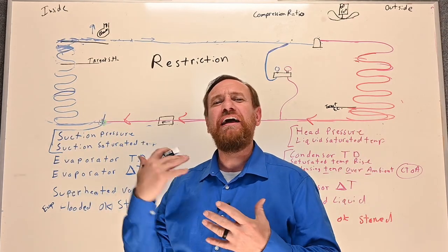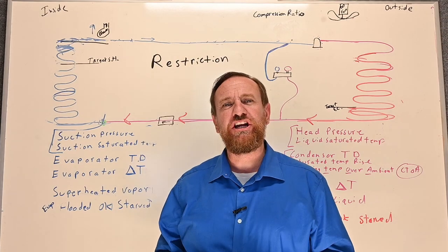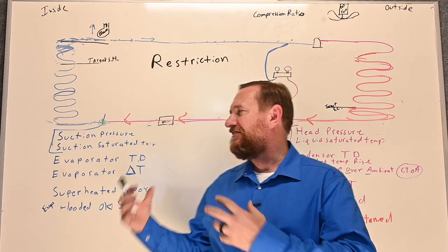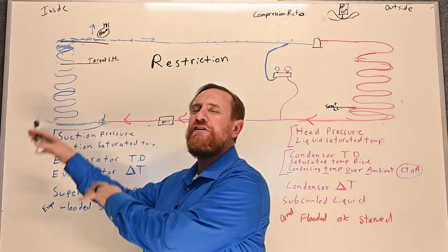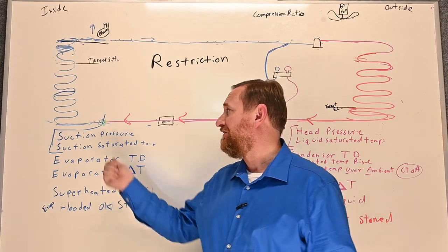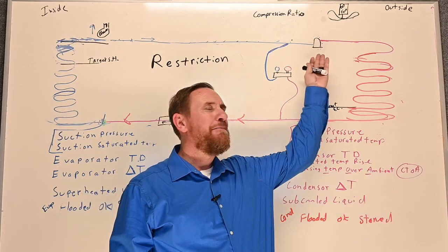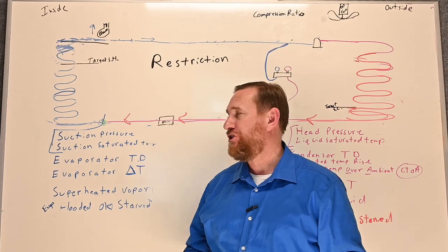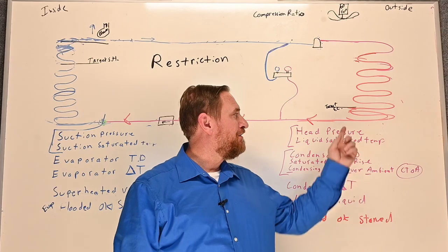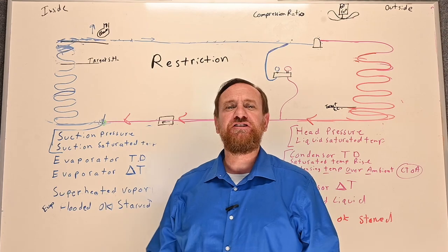Now that we understand a refrigeration cycle, let's apply another scenario: a refrigerant restriction. A refrigerant restriction means it's not flowing from the condenser to the evaporator like it should. There are multiple things that can cause refrigerant restrictions, such as the metering device being too small, a TXV stuck closed, a kink somewhere in the liquid line, a closed valve, or a clogged filter dryer.